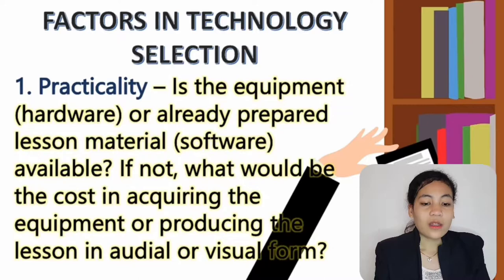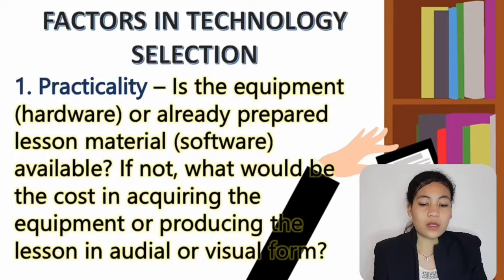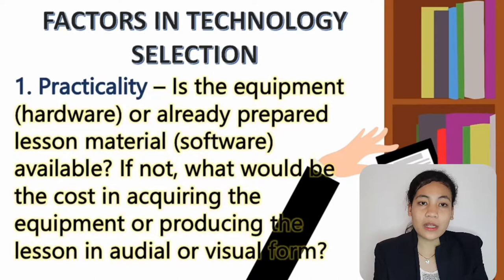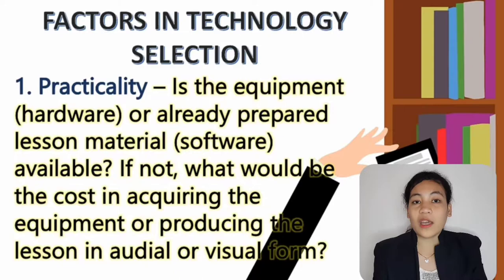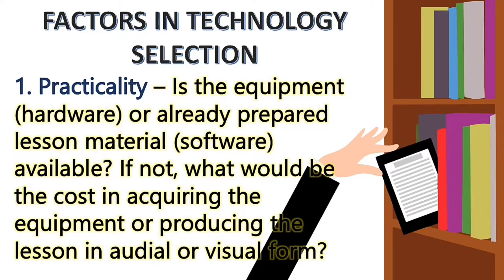First is practicality. The question here is: is the equipment or already prepared lesson material available? If not, what would be the cost in acquiring the equipment or producing the lesson in audio or visual form? The first thing we must consider is the budget — consider your funding sources and their availability. A one-time allocation of funds requires selecting technology with a long lifespan, considering durability. It must be durable, low cost, and non-violent.